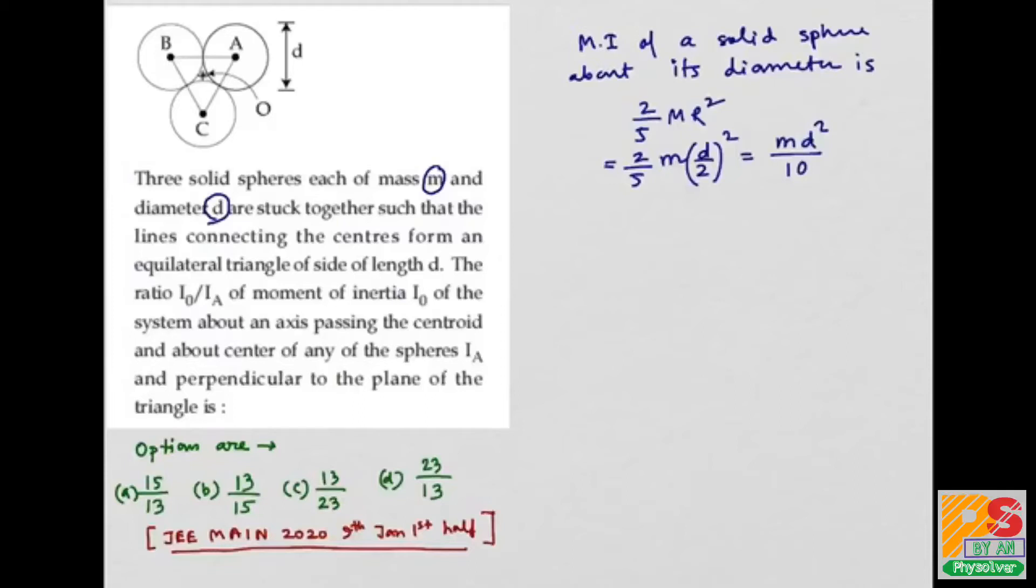Now these are the three spheres, and this is the equilateral triangle. The side of the triangle is also D. First we have to find moment of inertia of the system about the centroid of the triangle. This is the point O.